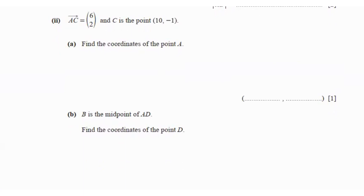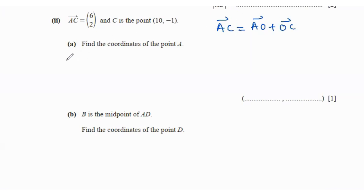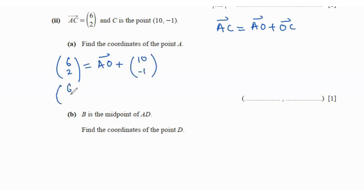In the next part, we're given AC and point C, and we have to find the coordinates of point A. We know AC is basically AO plus OC. Since we're trying to find A, we have AC as (6, 2) and OC as (10, -1).